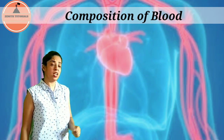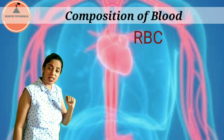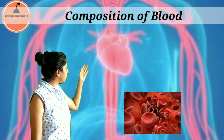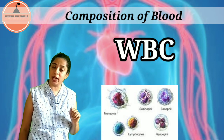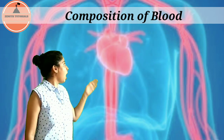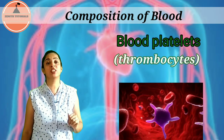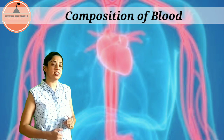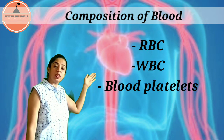The cellular elements constitute around 40 to 45 percent of the blood and are composed of red blood cells — also known as erythrocytes — white blood cells — also known as leukocytes — and blood platelets — also known as thrombocytes. In our next video we will study all three of them in detail.